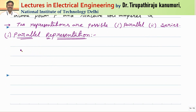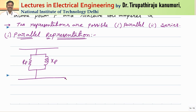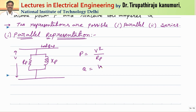First, I am starting with the parallel representation. In the case of parallel representation, there will be a reactor or inductor to represent the reactive power, which I can write as xp, and this represents the active power taken, which I can write as rp — this is my load bus. The active power consumed will be equal to V squared multiplied by rp, and the reactive power taken by xp: Q equals V squared divided by xp.